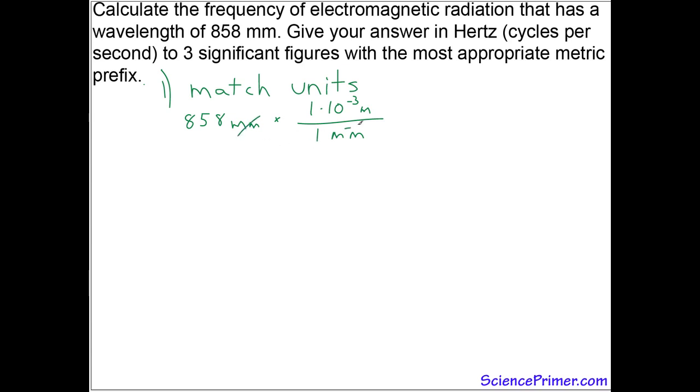If we do this, the millimeters will cancel. Multiply 858 by one times ten to the minus three, and we end up with the answer of 0.858 meters.